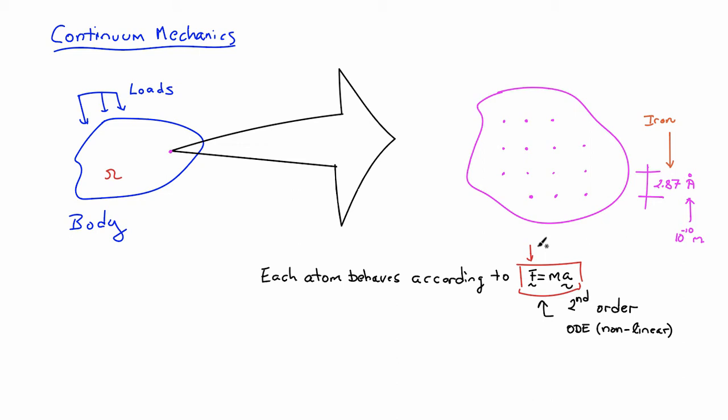So what you end up with is a system, a second order ODEs, nonlinear ODEs that represent the behavior. So ODEs tend to be modestly straightforward things to solve. But in this case, they are nonlinear.